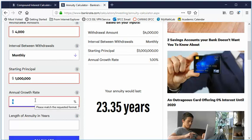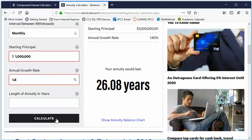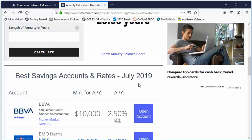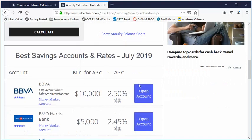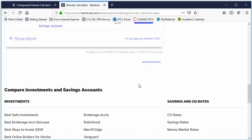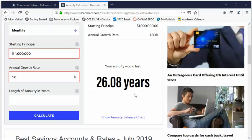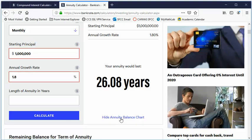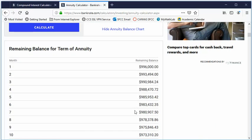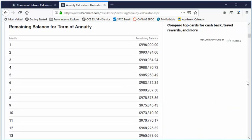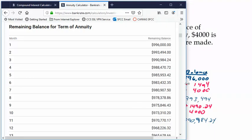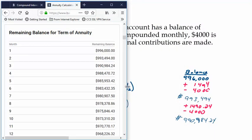Let me put this back to how we had our numbers. I want to show you, you can scroll down. There's a place here where it will show you the calculations that we were just doing. Show annuity balance chart. This looks good. This looks like what we were doing.